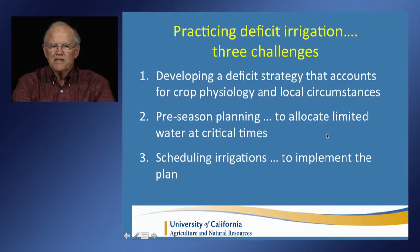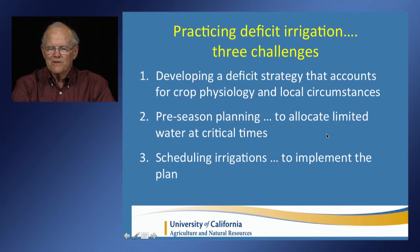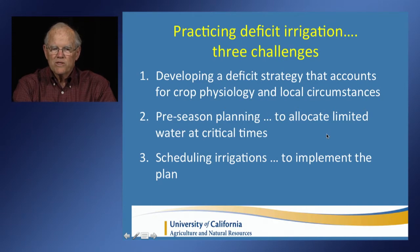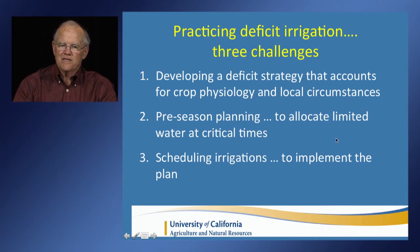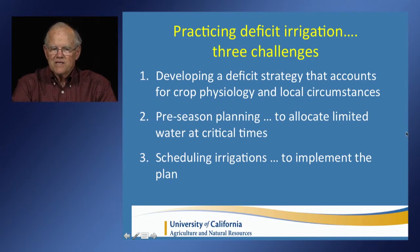I'm going to frame the discussion in terms of three challenges that confront a farmer undertaking deficit irrigation. The first challenge is to develop a deficit strategy that adequately accounts for the crop — that is, the crop physiology, how it will respond to stress at different stages of growth. Deficit irrigation means we're going to impose stress on the crop, and the trick is to manage that stress in a way that actually improves net income. You also have to consider local circumstances such as the irrigation system, the soils, and the constraints on water supply.